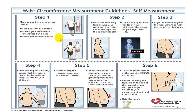Waist circumference measurement is very important and must be calculated properly by following all steps — step 1 through step 6. If you don't follow these steps properly, your circumference measurements may be wrong, leading to false interpretation of obesity.